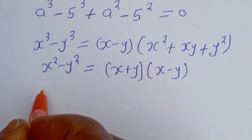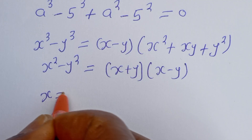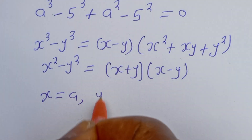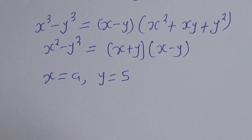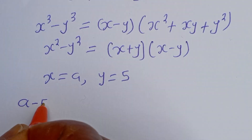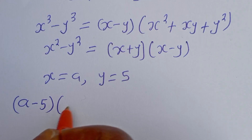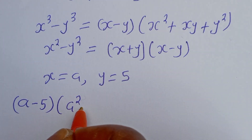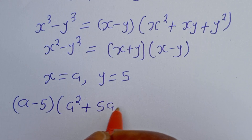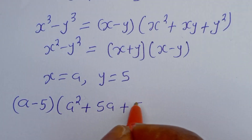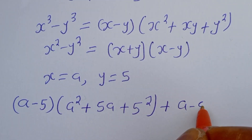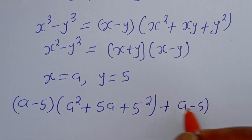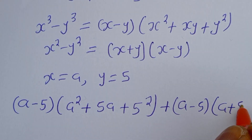From the equation above, s is equal to a and y is equal to 5. Applying the factoring identities, we get (a minus 5)(a squared plus 5a plus 25) plus (a minus 5)(a plus 5) equal to zero.